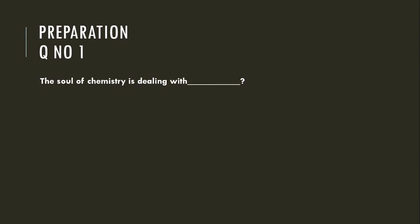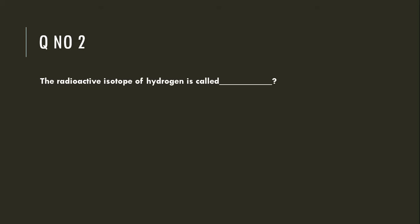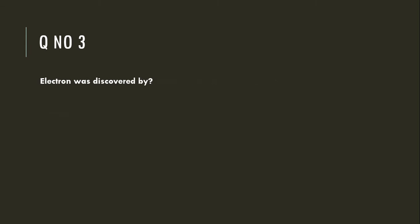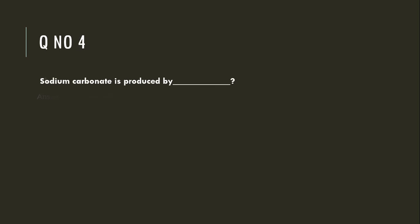The first MCQ: the soul of chemistry is dealing with composition and properties of matter. The radioactive isotope of hydrogen is tritium. Electron was discovered by J.J. Thomson. Sodium carbonate is produced by the ammonia Solvay process.